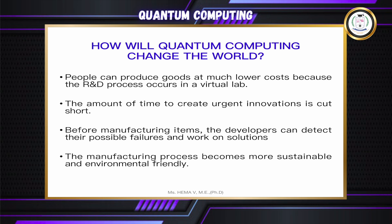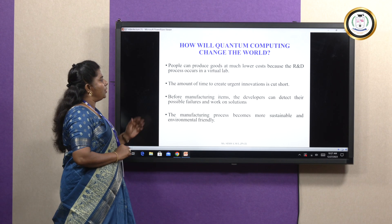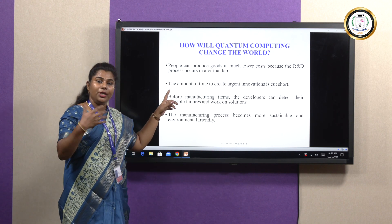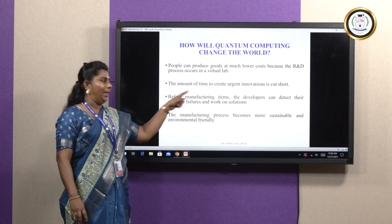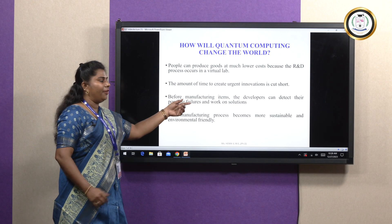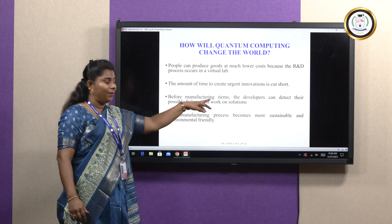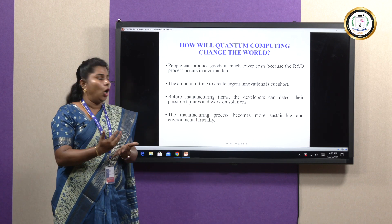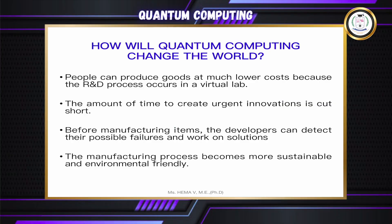How is quantum computing going to change the world? People can produce goods at much lower cost because the R&D process occurs only in the virtual lab. The amount of time to create certain innovations is cut short. Before manufacturing items, developers can detect possible failures and work on solutions. The manufacturing process becomes more sustainable and environment friendly.